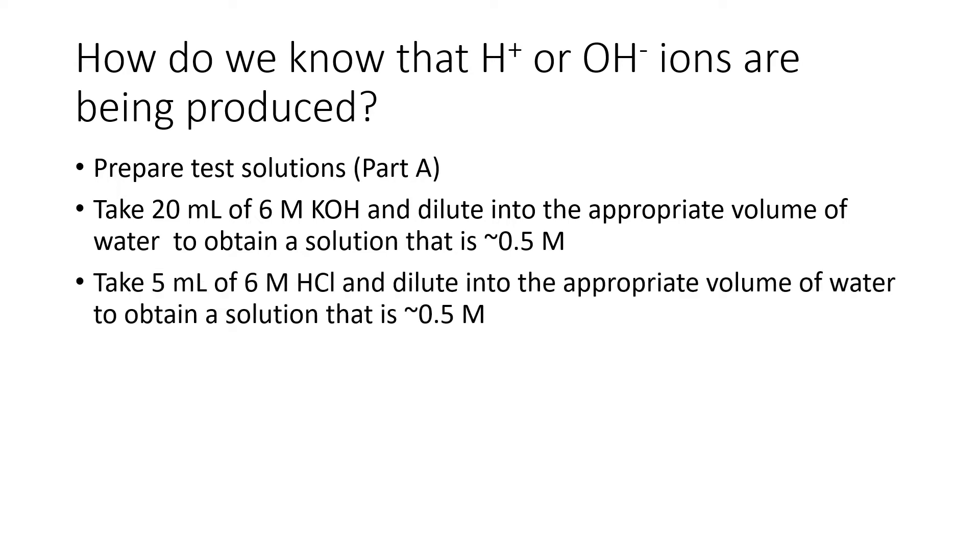Similarly, you're going to take 5 milliliters of a 6 molar HCl solution and dilute it into the appropriate volume of water to obtain a solution that is approximately 0.5 molar. The third test solution is going to be sodium chloride. You're going to take a small amount of sodium chloride, add it to a test tube, and add about 5 milliliters of water.